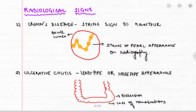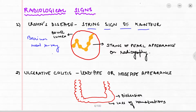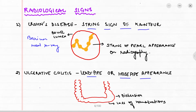Moving on to radiological signs: in Crohn's disease we see the string sign of Cantor on barium meal X-ray, where a string-of-pearls appearance is seen in the bowel lumen. In ulcerative colitis, we see a lead pipe or hose pipe appearance, with absence of normal haustra. This distension can also lead to toxic megacolon.